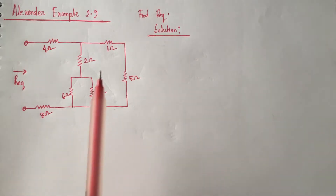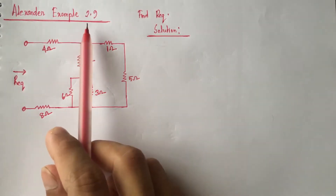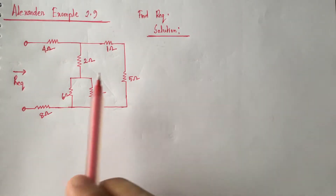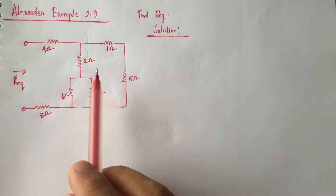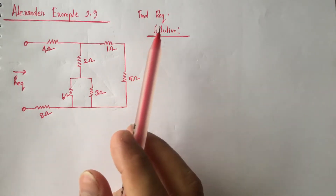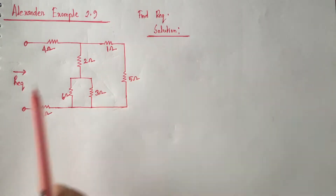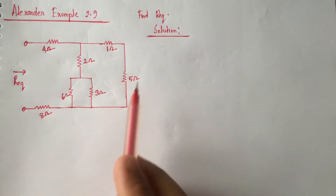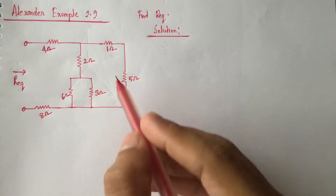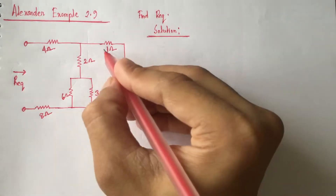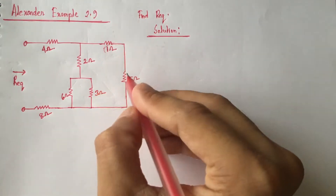Hi viewers, today we will solve Example 2.9 from Alexander. This is a series-parallel resistance equivalent circuit problem. Here we have to find the equivalent resistance for the circuit.